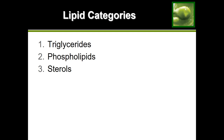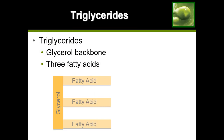Now that we know about fatty acids — the building block of fats — we can look at how these building blocks form different types of fats or lipids. The three main categories are triglycerides, phospholipids, and sterols. Starting with triglycerides: they are the main dietary fat, so when you get fat from a meal it's primarily in triglyceride form. A triglyceride has a glycerol backbone with three fatty acids attached — one glycerol and three fatty acids.